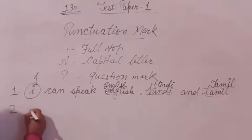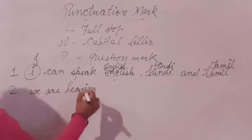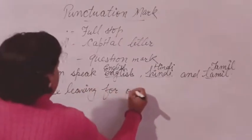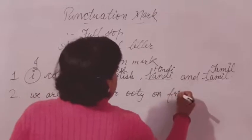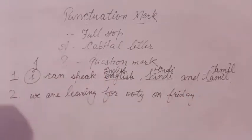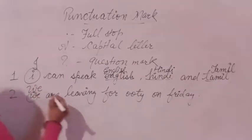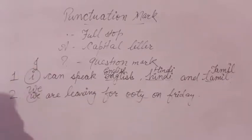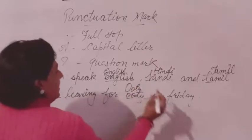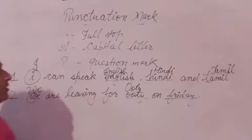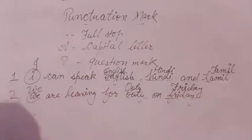The second example is: 'We are leaving for Ooty on Friday.' We will remove the errors and write the first letter as capital. 'Ooty' is the name of a place, so it should be capitalized. 'Friday' is the name of a day, so it is also written with a capital letter. In this way, you will complete all of this exercise.